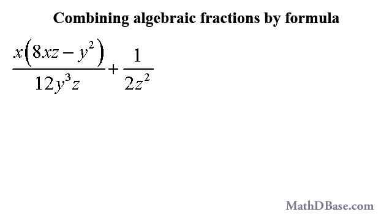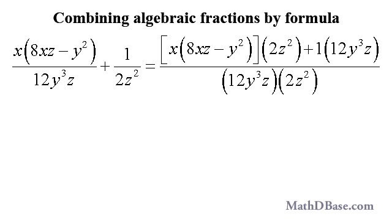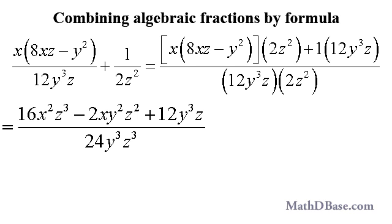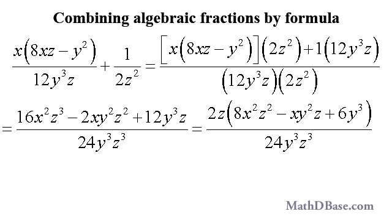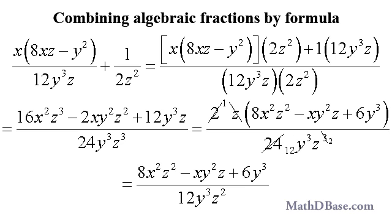If we then want to add 1 over 2z squared to that last result, we can apply the first of the addition formulas. Cross-multiply the terms, expand, then factor out a common 2z from all three terms in the numerator, and end up with the same result that we got in the addition and subtraction example using the LCD method.